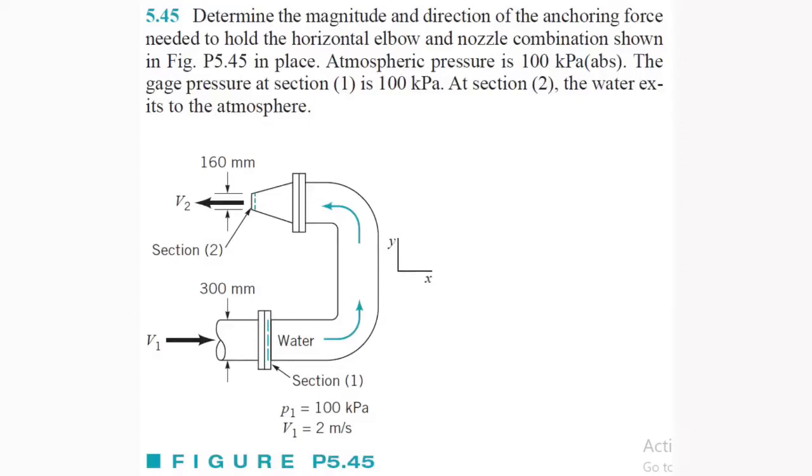Alright, what's going on everybody? We got problem 5.45. It says determine the magnitude and direction of the anchoring force needed to hold the horizontal elbow and nozzle combination in place. The atmospheric pressure is 100 kilopascals, and the gauge pressure at section 1 is 100 kilopascals. At section 2, the water exits into the atmosphere. Let's go ahead and get started.